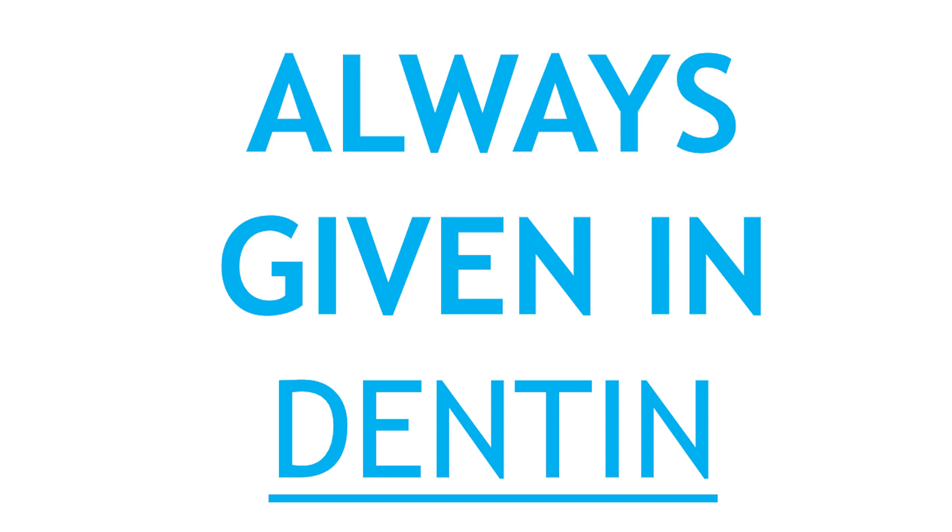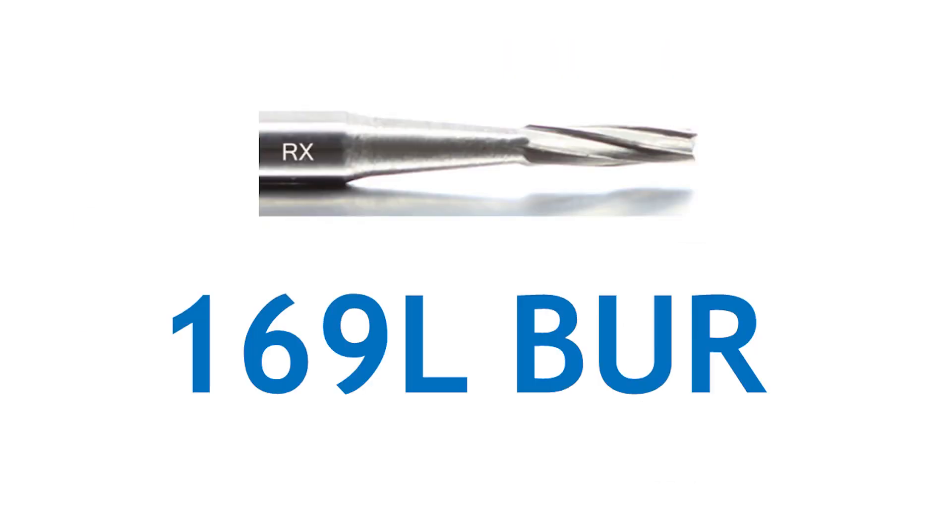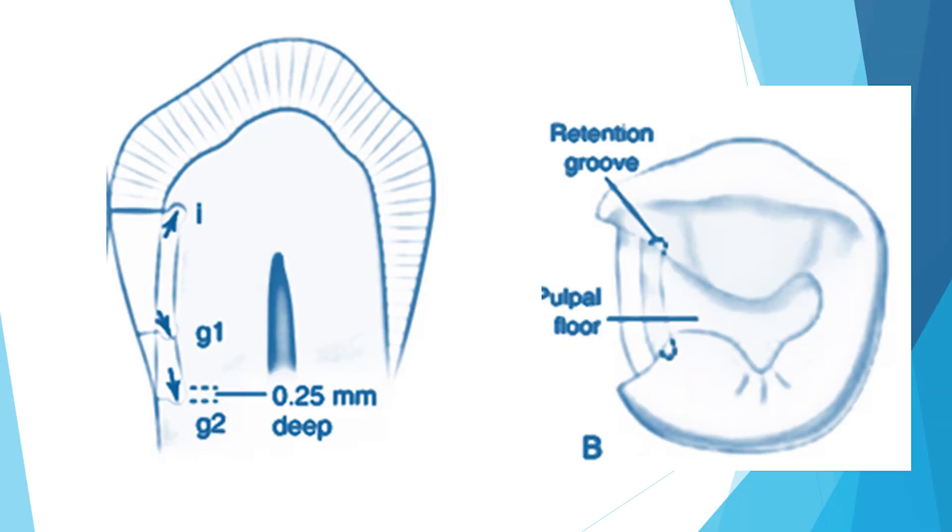You can give it vertically for class 2 restoration or horizontally for class 3 or class 5. Retention grooves use a 169L bur and are generally given in the axio-buccal and axio-lingual line angles for class 2 restorations.